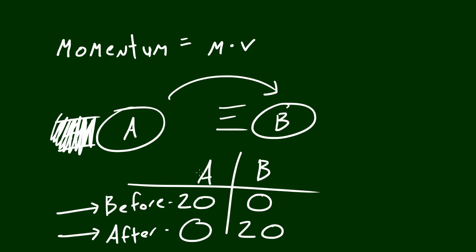So before this event, ball A had all the momentum, which is 20, and the total system had a momentum of 20, and after, even though the momentum shifted from ball A to ball B, it still had the same amount of momentum. All the momentum was conserved. So I think you guys finally understand the conservation of momentum.